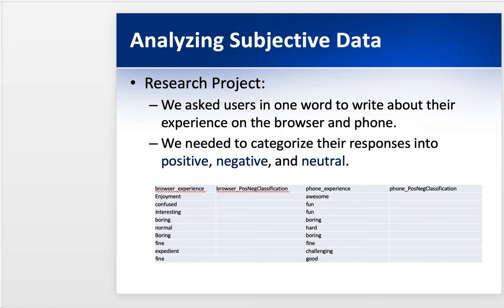Besides asking what do you prefer, we also just wanted to analyze it ourselves. So we asked them to tell us one word — give us one word about their experience. I put 10 examples below. You can see the browser is the large desktop computer group, and the phone was the people doing it on their phone. It's the same person. Right after they did the task, we said, tell us one word to describe your experience. You can see: enjoyment, confused, interesting, boring. And on the phone: awesome, fun, fun, boring, hard. So this is subjective data.